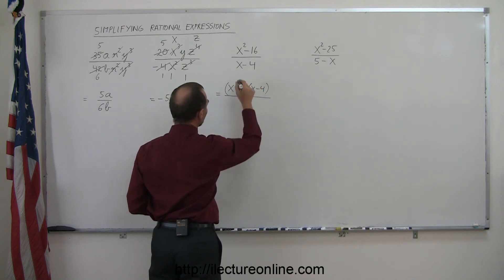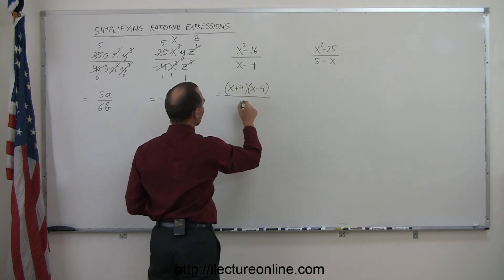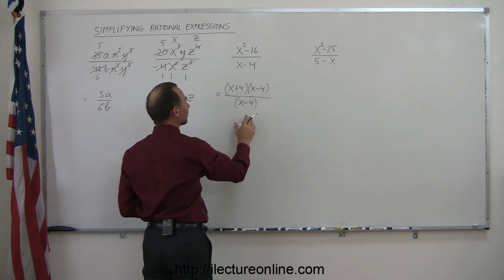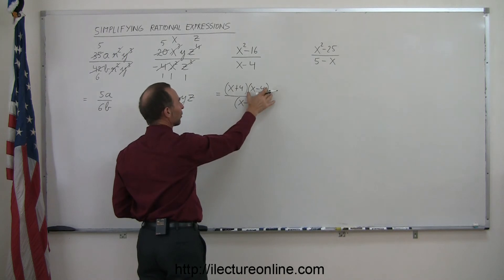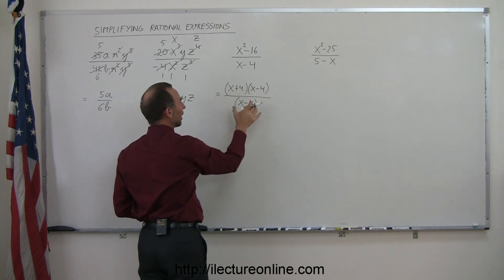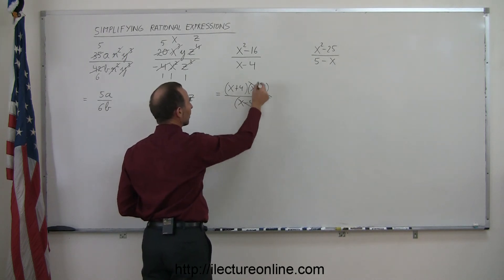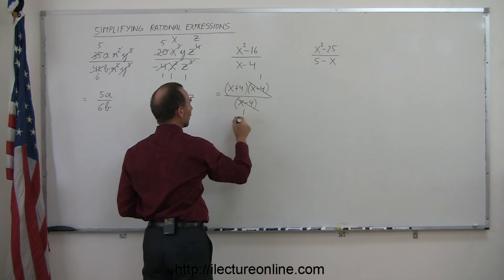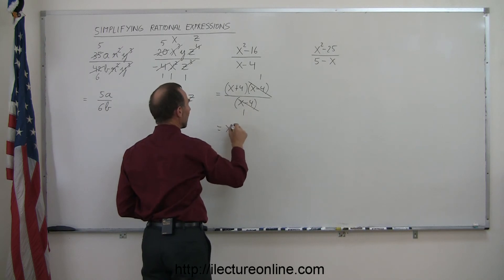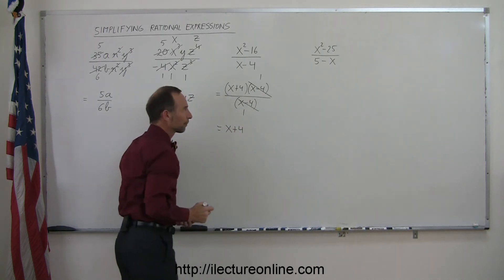We still have the denominator x minus 4. Now we realize there's an x minus 4 in the numerator and an x minus 4 in the denominator — we can cancel those out. Both become 1, and so this expression simplifies to simply x plus 4.